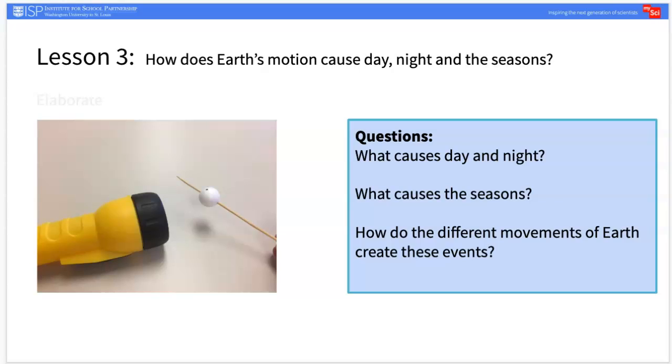Following the modeling activity, have a class discussion about what causes day, night, and the seasons. Students should understand that day and night are caused by the Earth's counterclockwise rotation on its axis every 24 hours. A year is caused by Earth's revolution around the Sun.